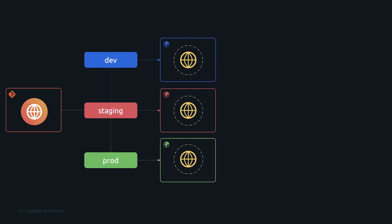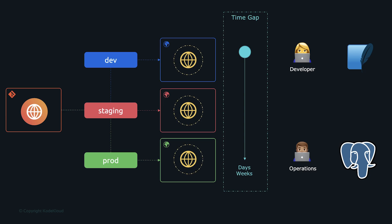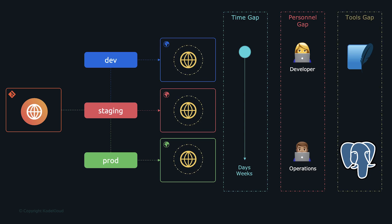Traditionally, changes took weeks or even months to go from dev to production. One set of people wrote the code; another deployed it. Different databases were used — SQLite in dev, PostgreSQL in prod. There is a time gap, a personal gap (ops teams with little knowledge of new changes making it hard to identify issues), and a tools gap (different tools in different environments causing unexpected consequences in production).